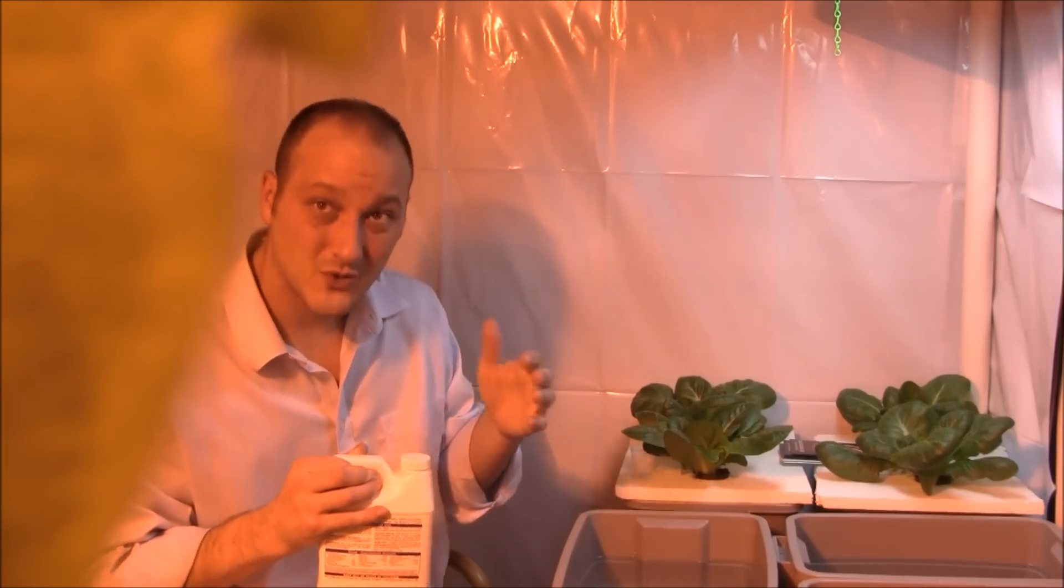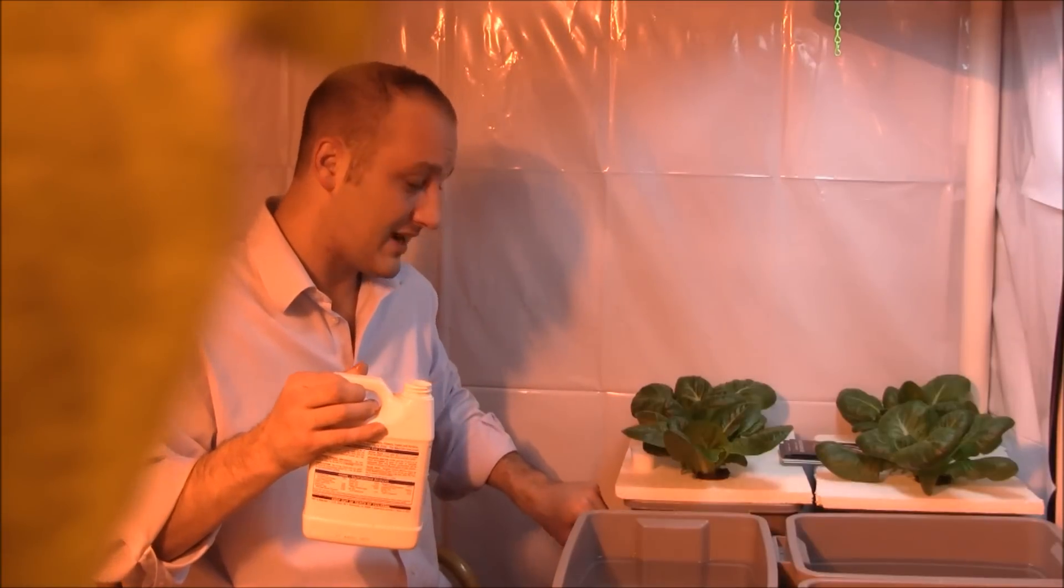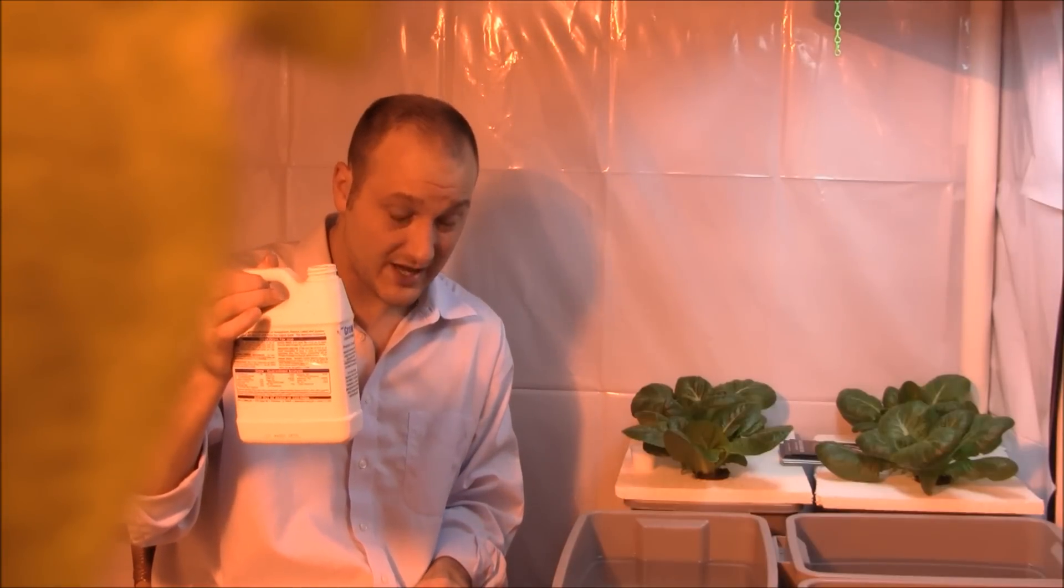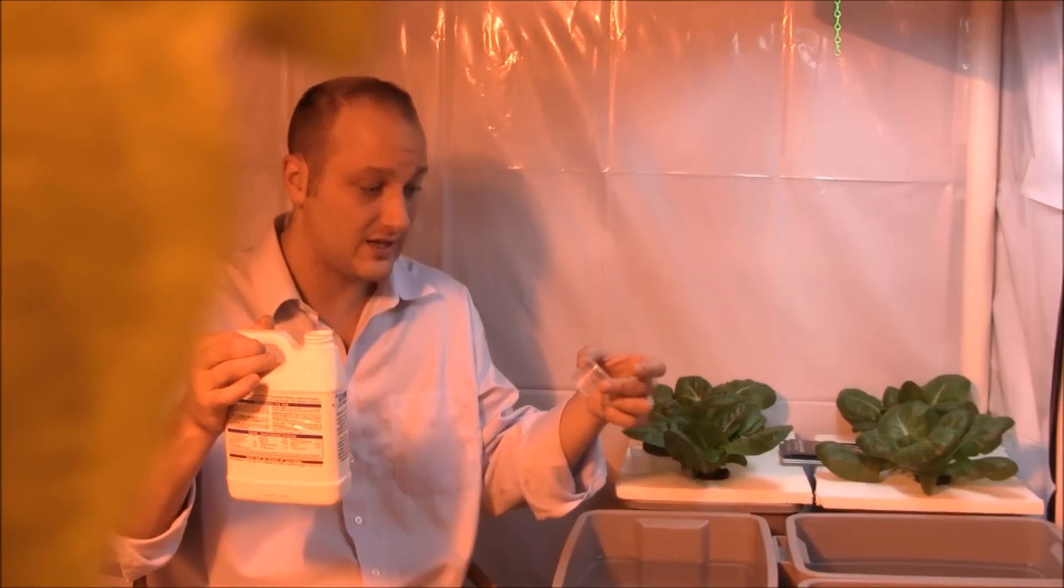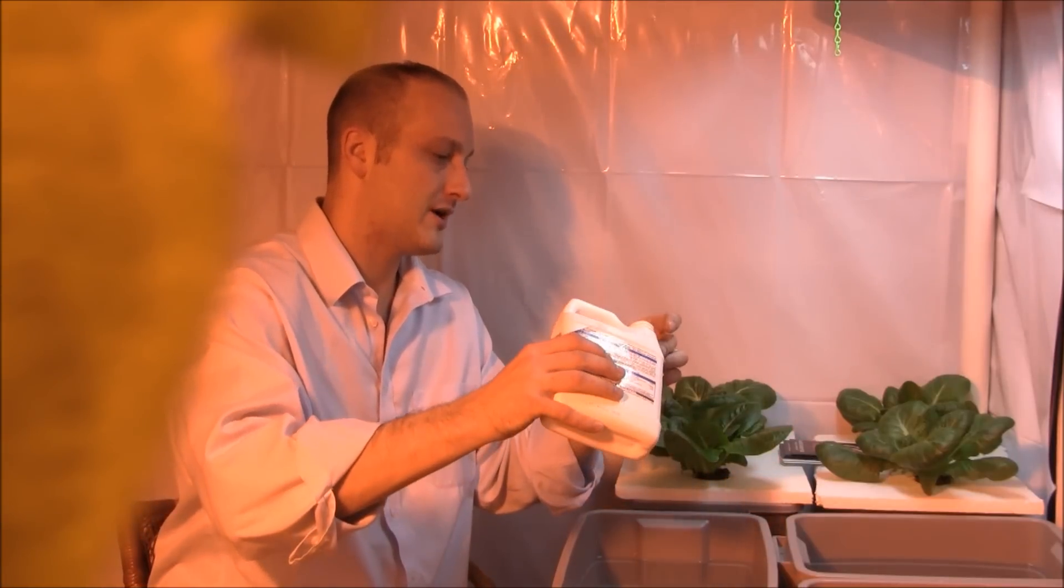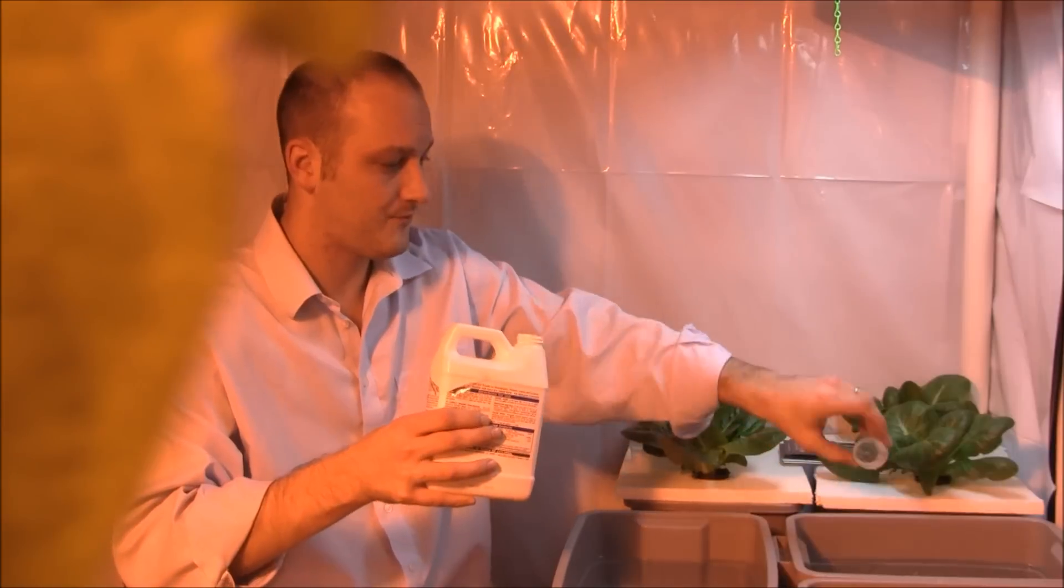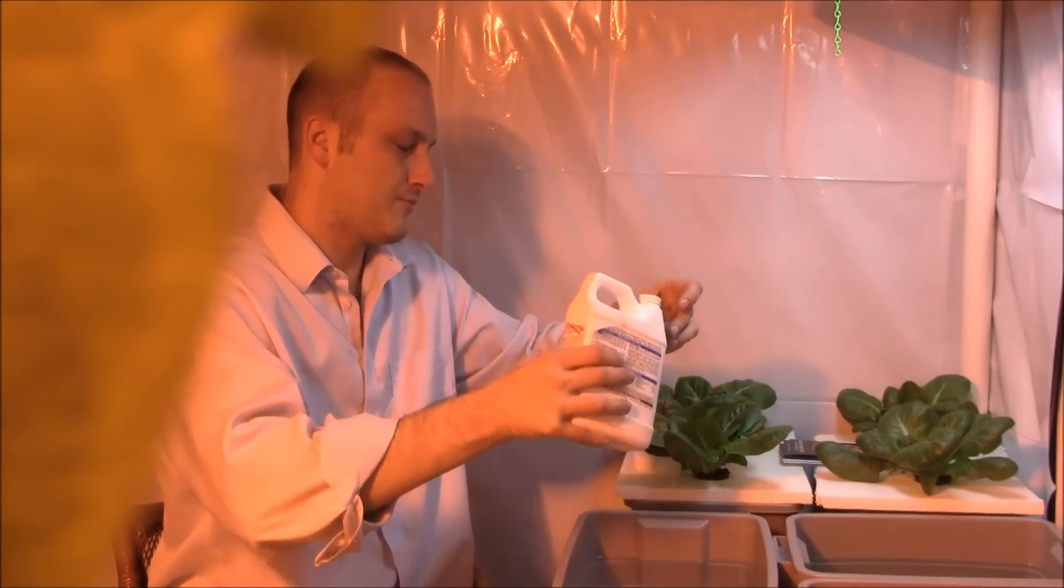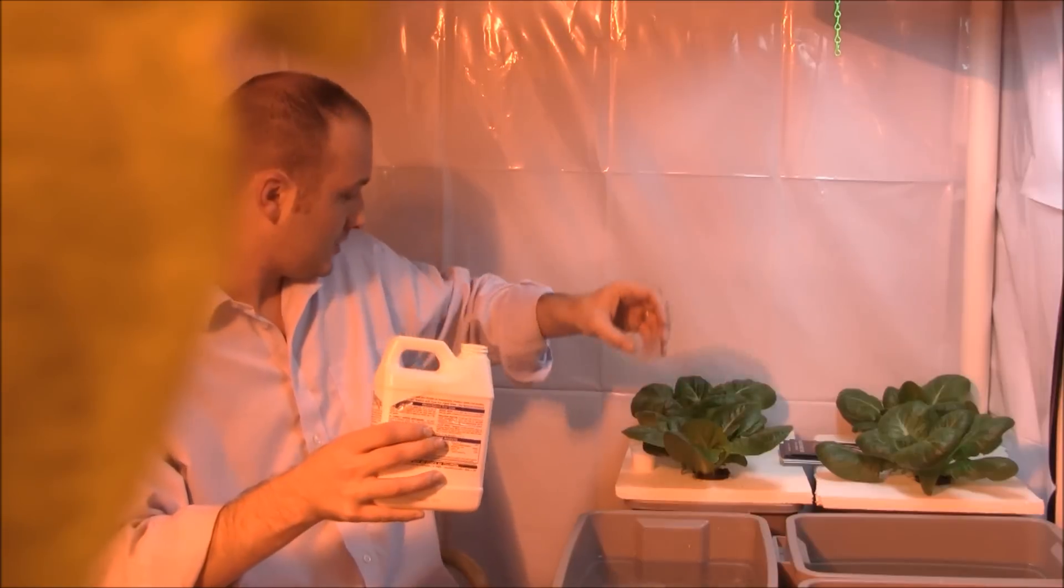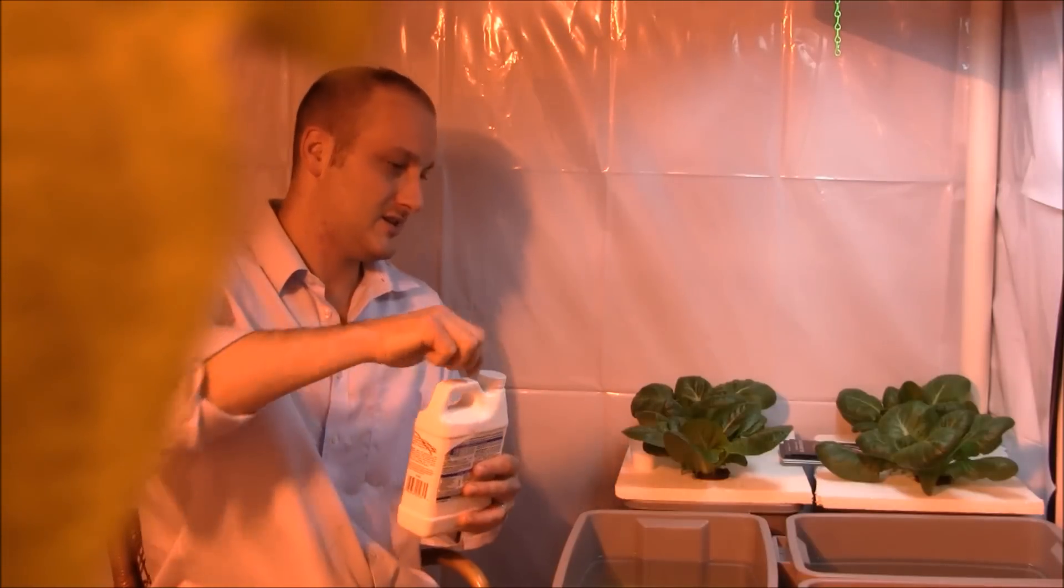This is not organic, but if you want to grow some lettuce in the winter time, this is a good way to do it. On the bottle, if you read the bottle, it says for a non-circulating system, one teaspoon per gallon. So it's pretty concentrated. I'm growing in three-gallon totes, so I'm going to need three teaspoons of nutrients for each one of these. Three, one, three, two. I didn't measure it down to the last drop, but close enough.